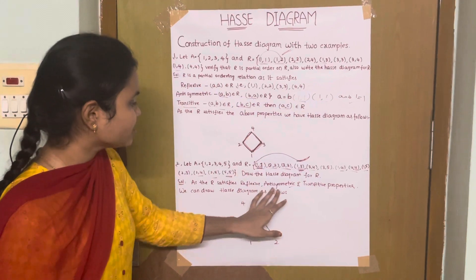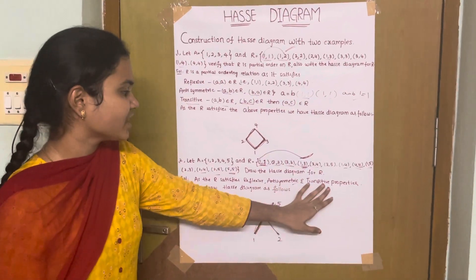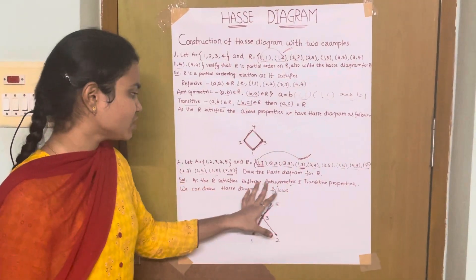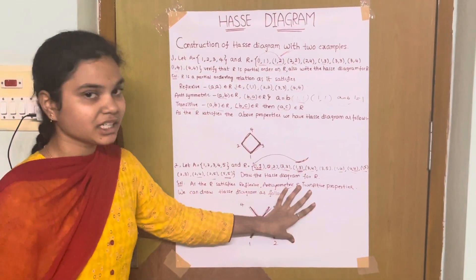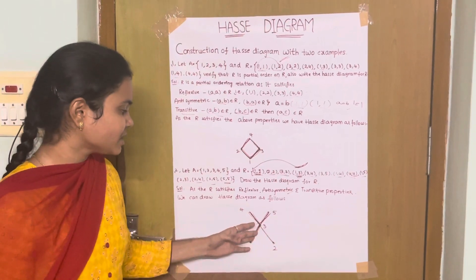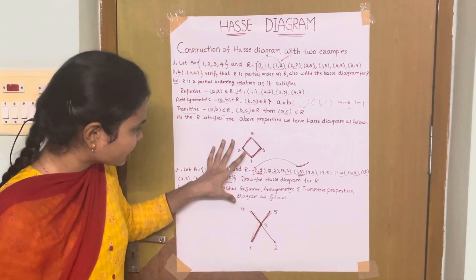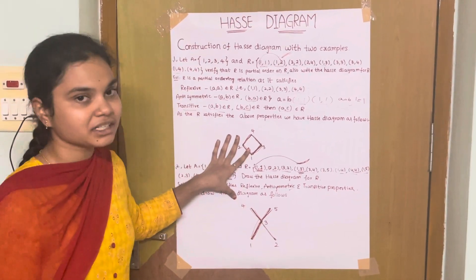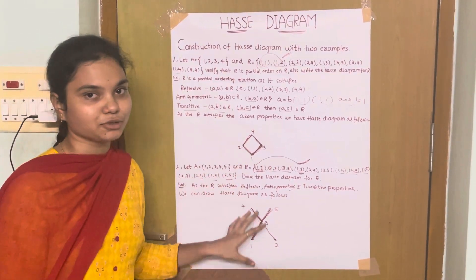As reflexive, antisymmetric, and transitive properties are satisfied, this is known as a poset. As it satisfies the poset conditions, these are the constructions of Hasse Diagrams. Thank you.